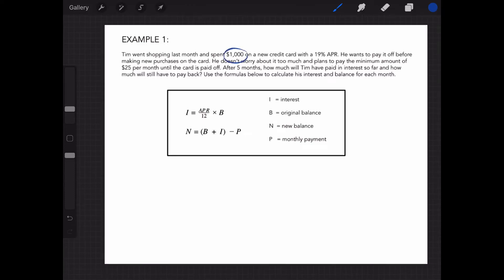Tim went shopping last month and spent $1,000 on a new credit card with a 19% APR. He wants to pay it off before making new purchases on the card. He doesn't worry about it too much and plans to pay the minimum amount of $25 per month until the card is paid off.